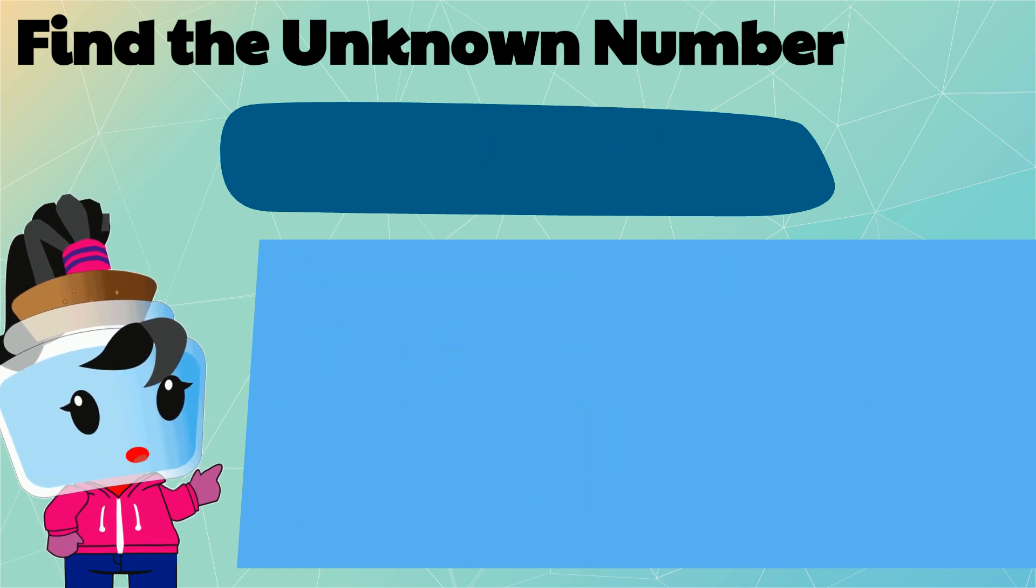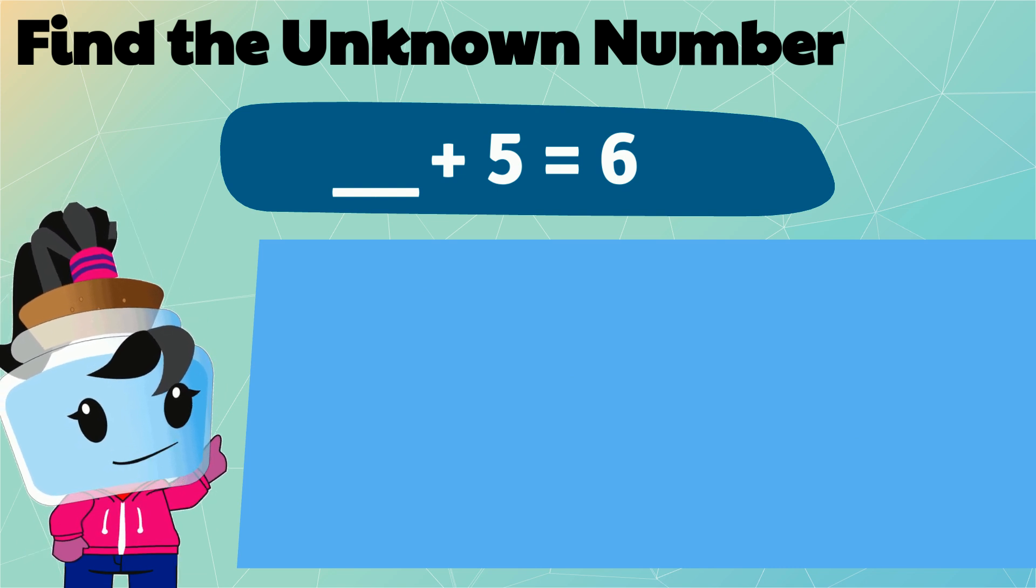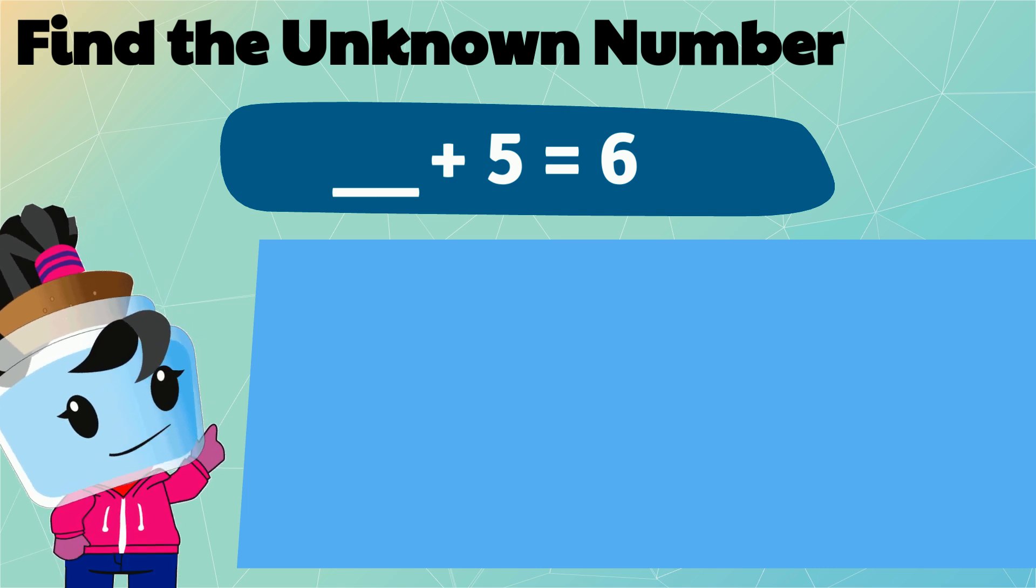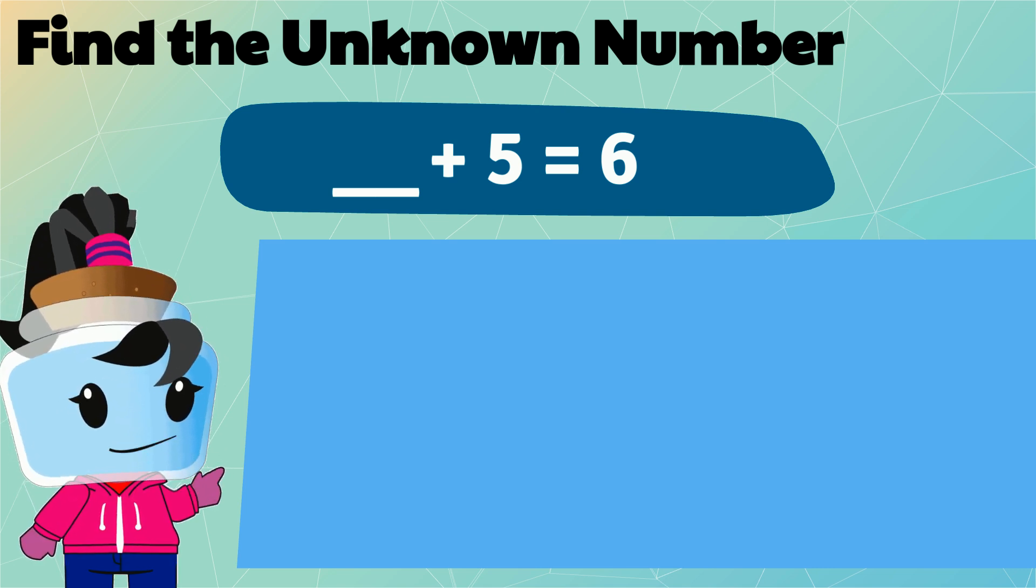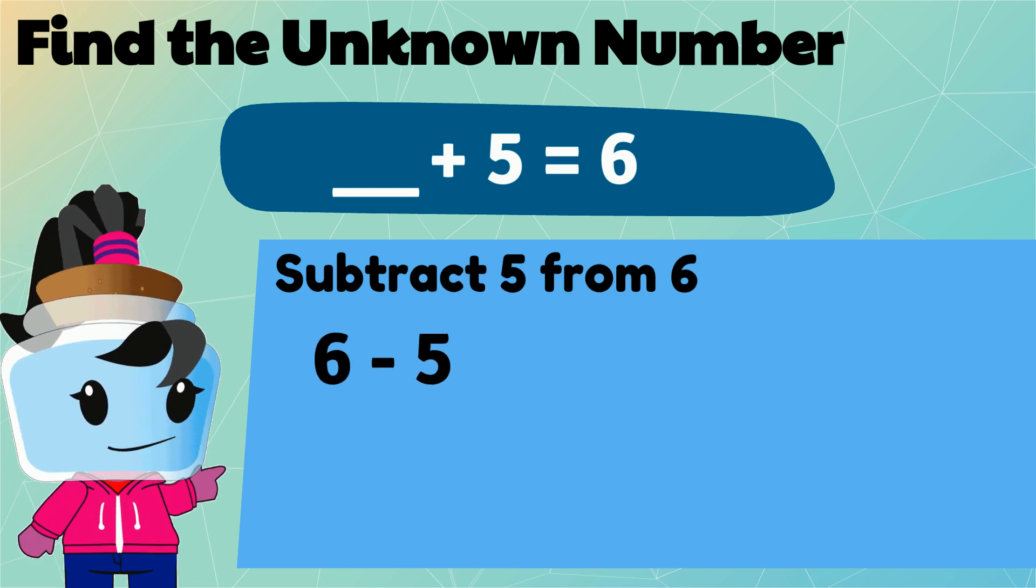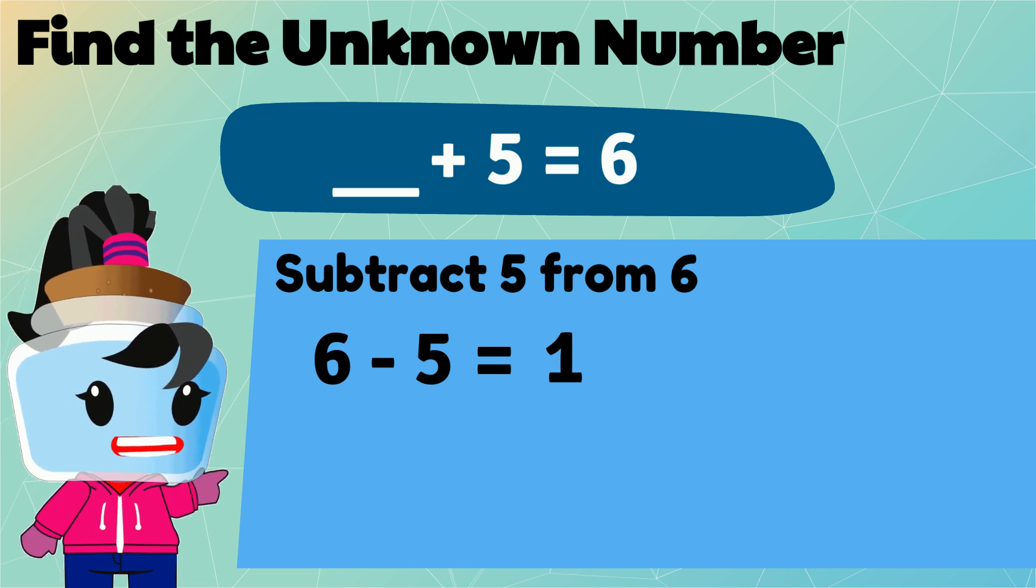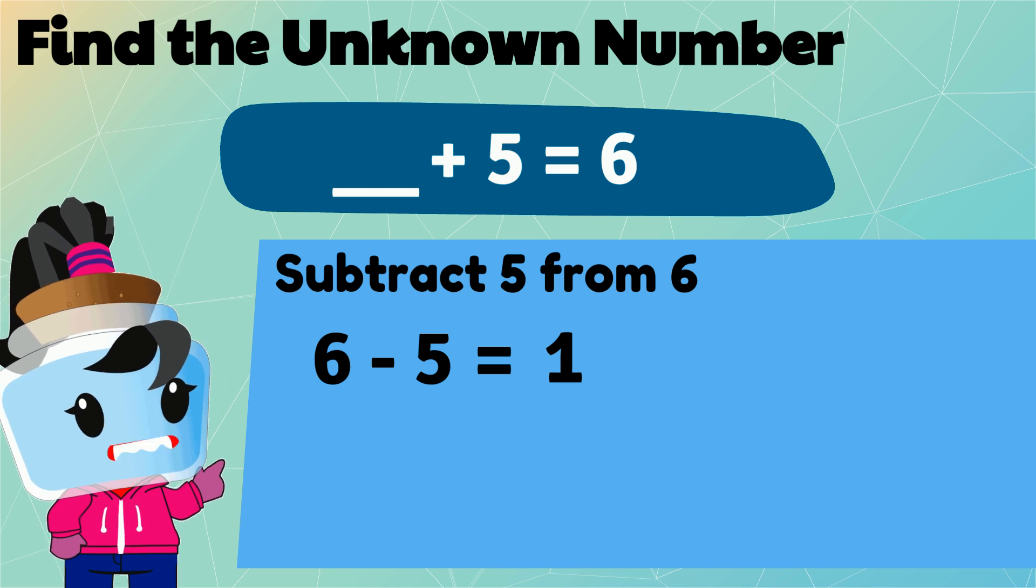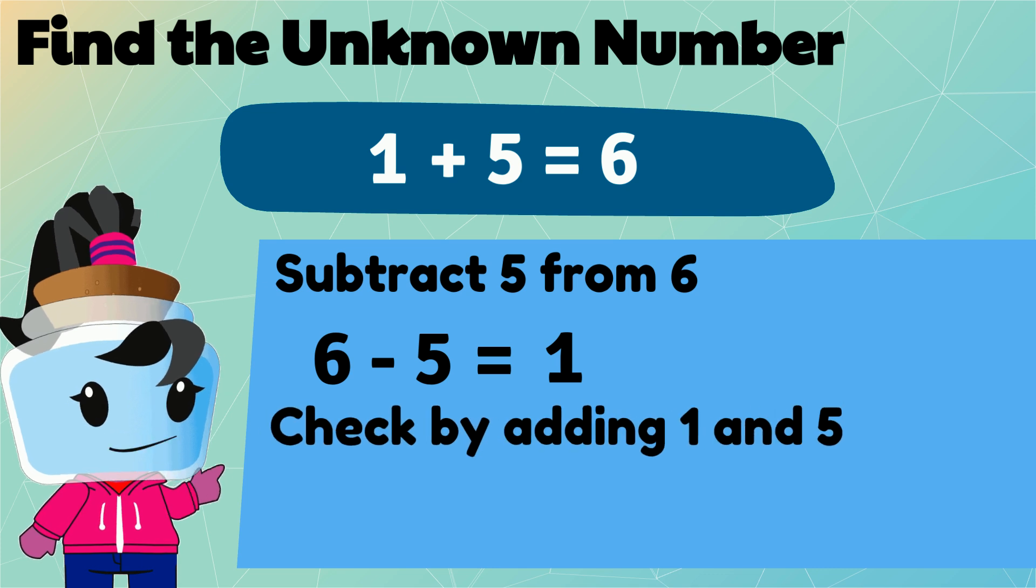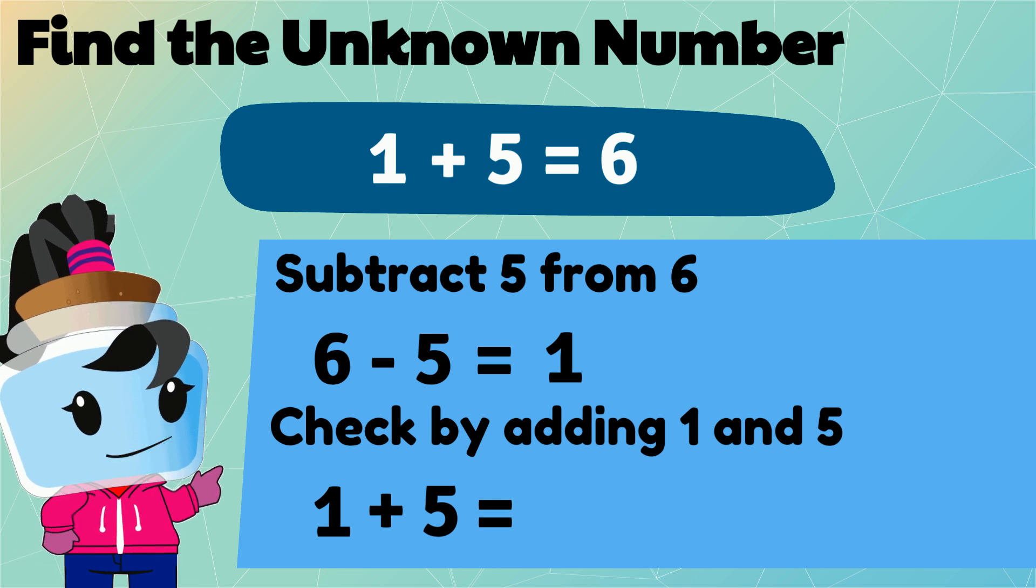Next, what unknown number plus 5 equals 6? Let's use subtraction again to find out the unknown number. 6 minus 5 will give us 1. The unknown number is 1. Let's cross check this: 1 plus 5 equals 6.